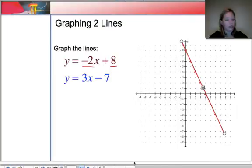All right, so let's check out the second line. The second line has a y-intercept of negative 7. That's way down here. And it has a slope of positive 3. So that means go up 1, 2, 3, over 1. Up 1, 2, 3, over 1. Up 1, 2, 3, over 1. 1, 2, 3. One more for good measure here.